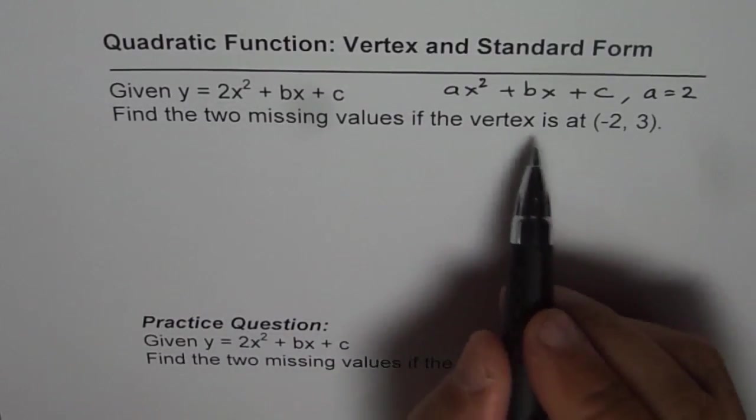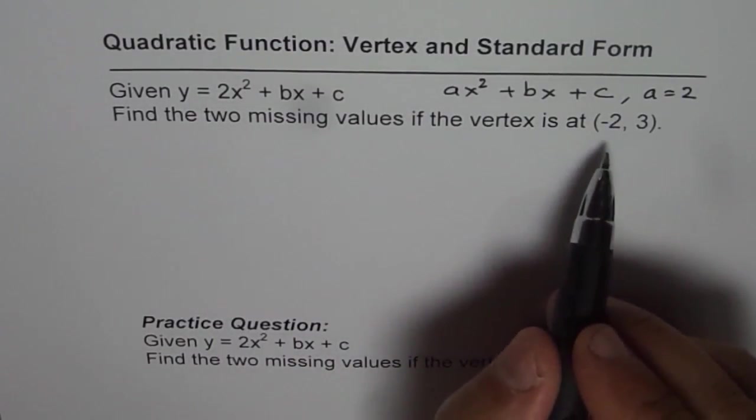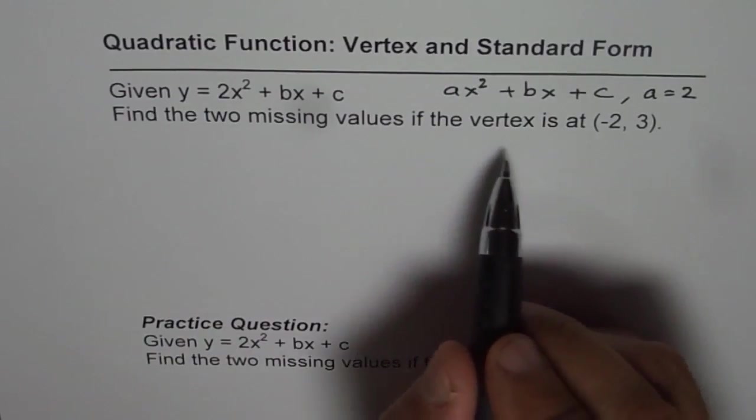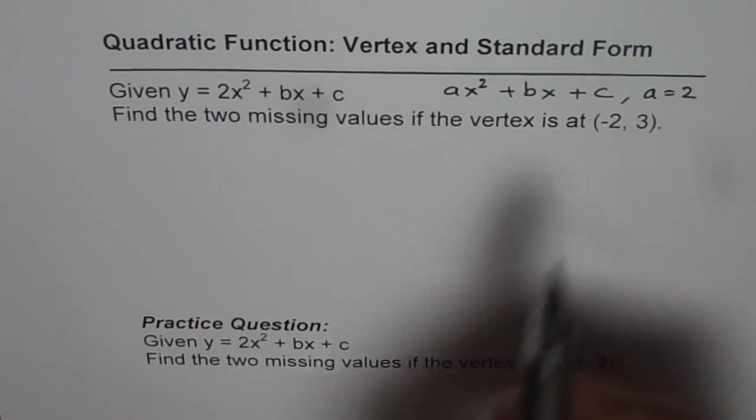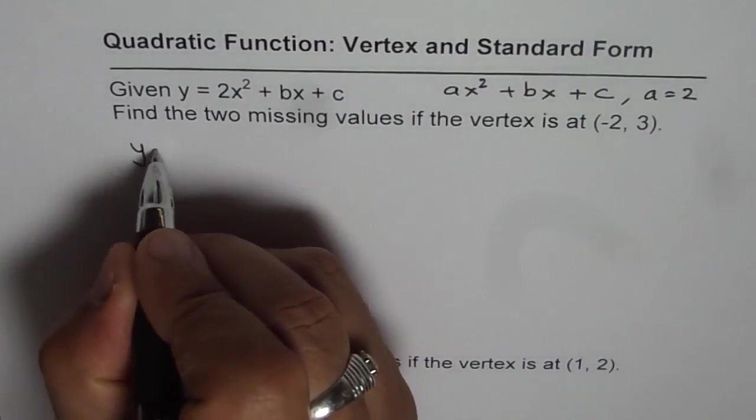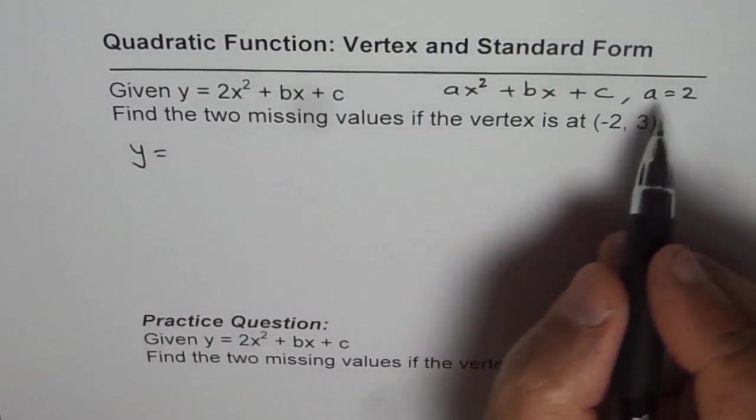So we will use this and the vertex given to us to write a quadratic equation in vertex form. For a vertex of (-2, 3), we can write y equals 2, a is 2 for us.